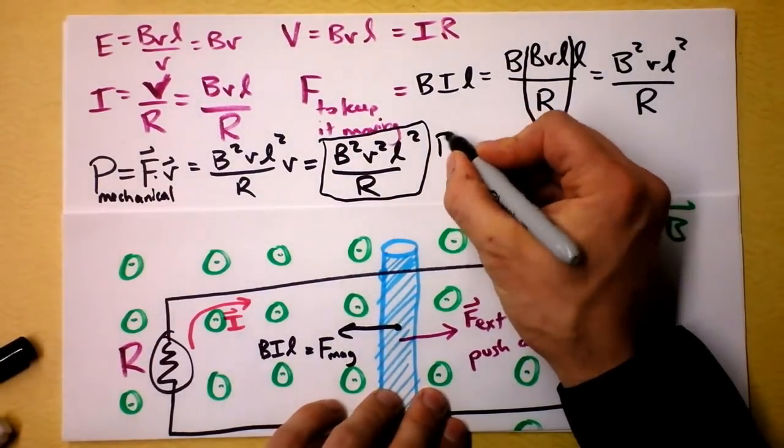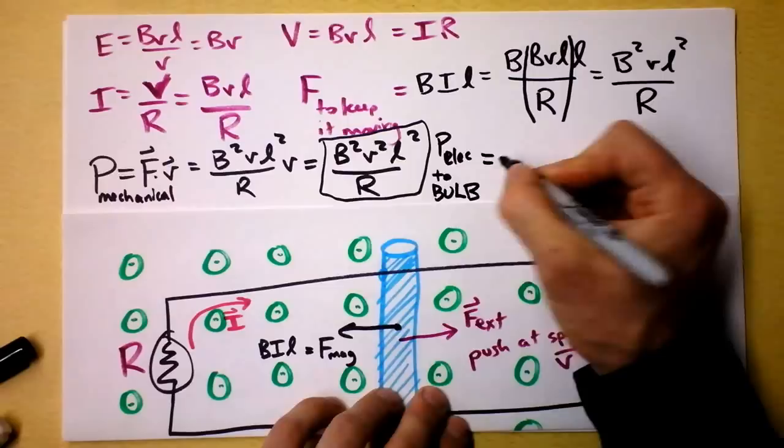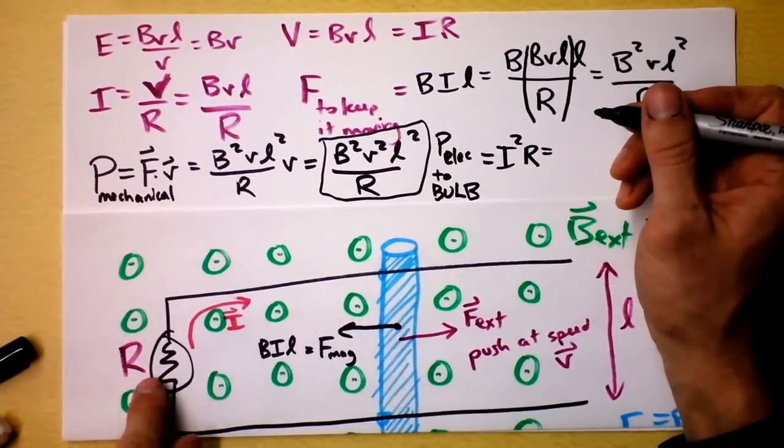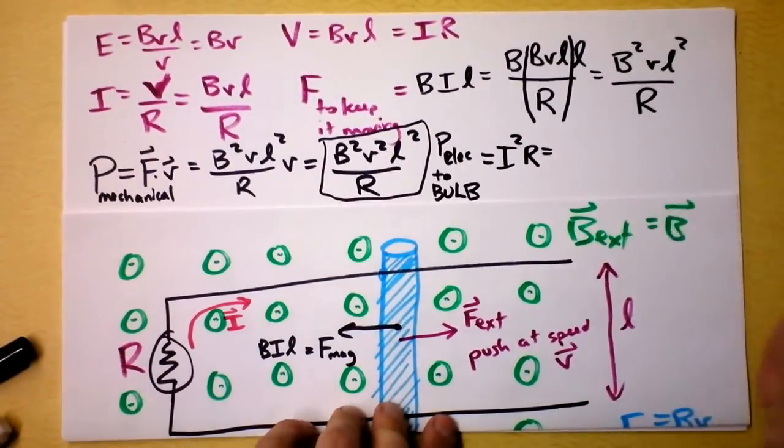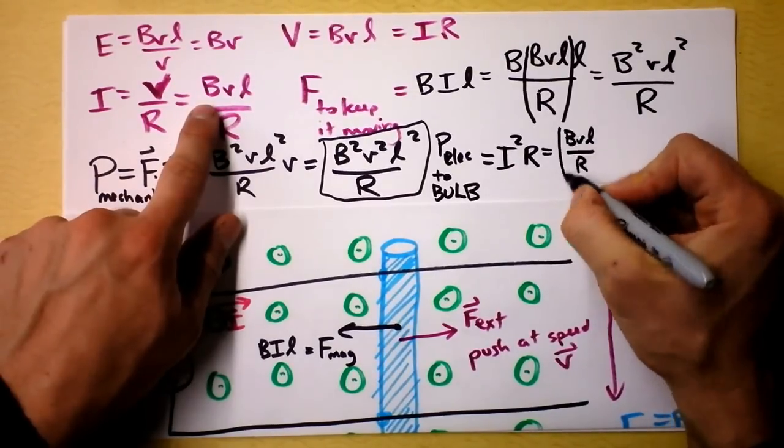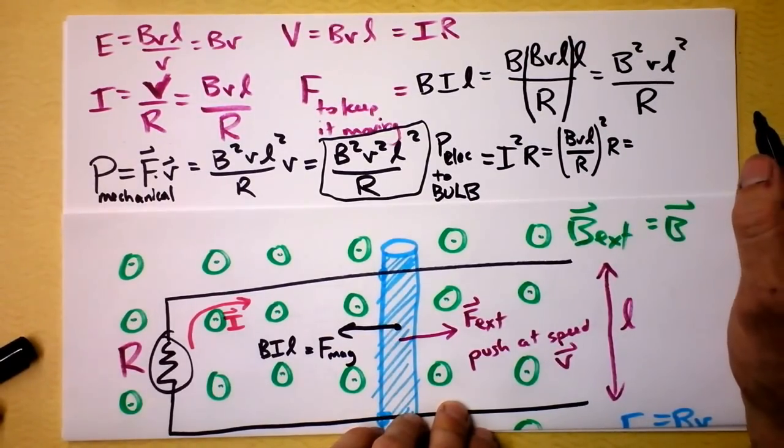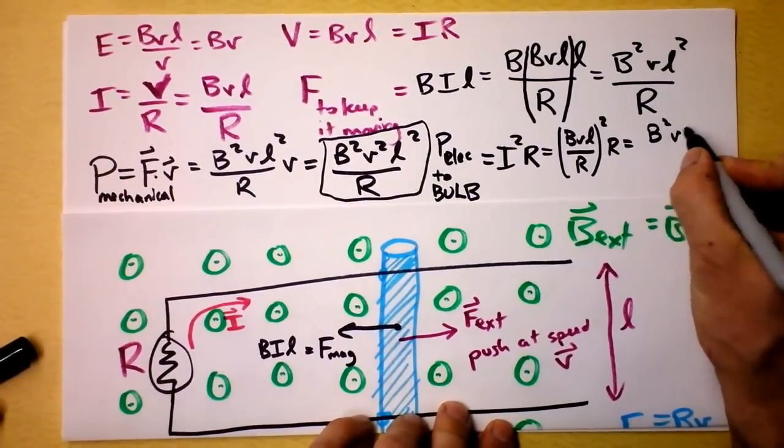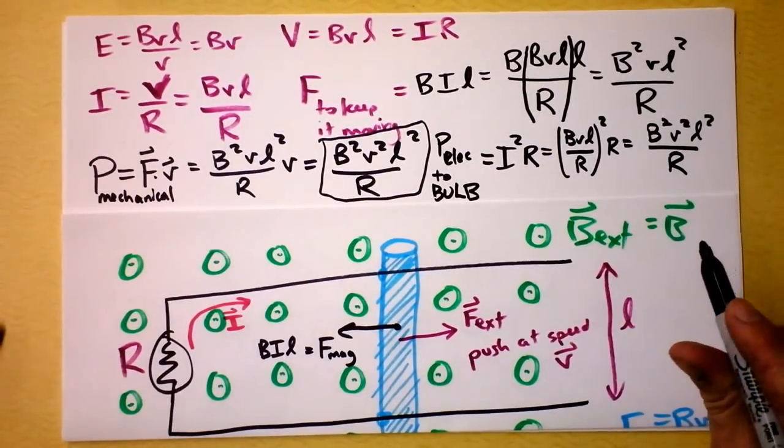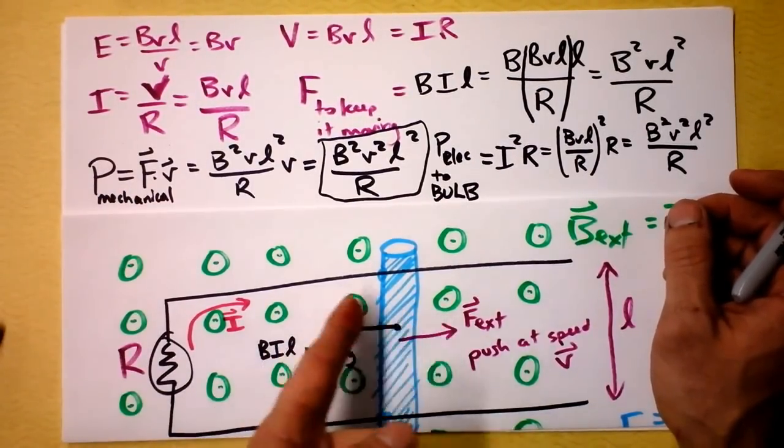But I'm interested now in the electrical power. Power electrical to the bulb. Electrical power, you can see it any way you want. You want to call it I squared R? Sure, that's fine with me. The joule heating, the energy delivered per second to this resistor because of the current that's going through it and lighting up the light bulb. Let's take I. What's I here? We're going to square that. I got B, V, L divided by R, and I'm going to square it. And then I have to multiply the whole thing by R. It's B squared times V squared times L squared divided by R. We have just concluded that the power that the bulb gets is exactly equal to the power that we're putting into the system by pushing this thing. We've created a generator.